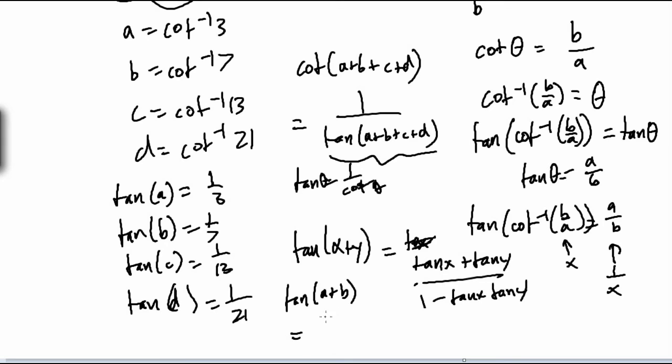So this tangent A plus B would be 1 third plus 1 seventh over 1 minus 1 over 21, which is just 1 half, I think.